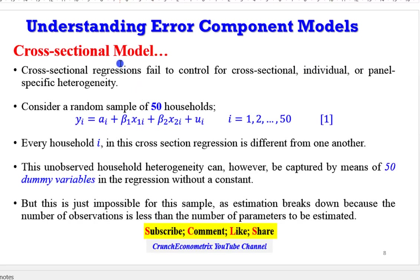Let's consider a cross-sectional model. Equation 1 is a cross-sectional model. In this example, it contains a sample of 50 households. And one peculiarity of cross-sectional model is that it fails to capture the cross-sectional or individual or panel-specific heterogeneity. Because in this model, every individual is different from one another. Therefore, if they are to be captured, if their differences are to be captured,